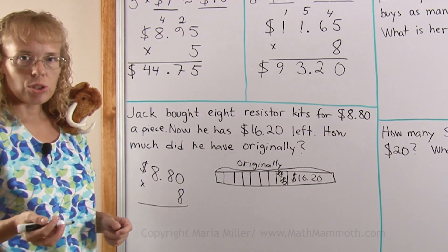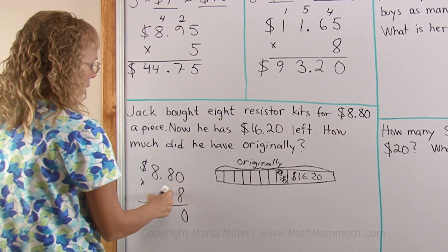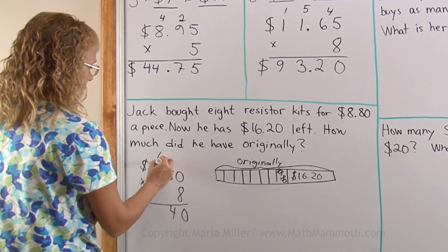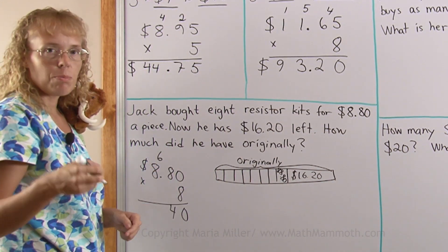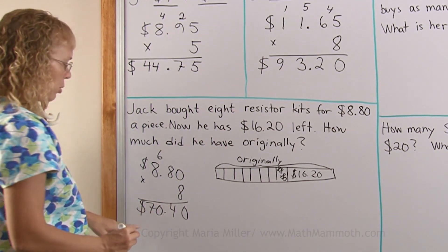8 times 0. 8 times 8. 8 times 8 again is 64. Plus 6 is 70. $70.40.